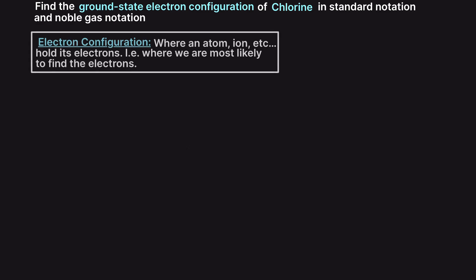When finding the electron configuration of an atom, we are being asked where does that atom or ion or molecule place its electrons, i.e. which shells and orbitals are its electrons most likely to be found in?